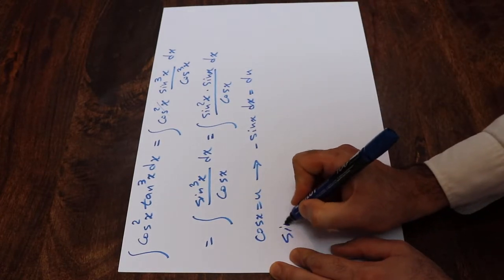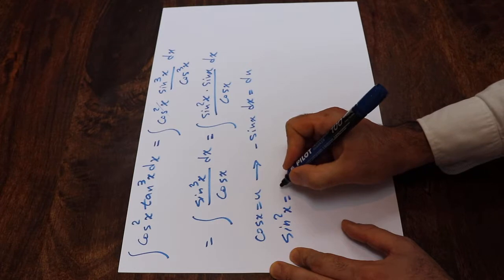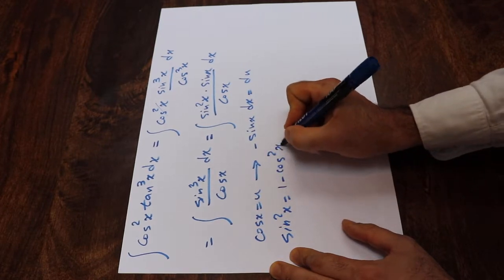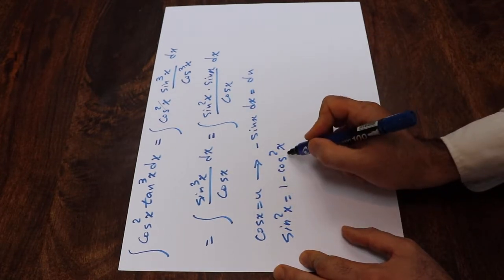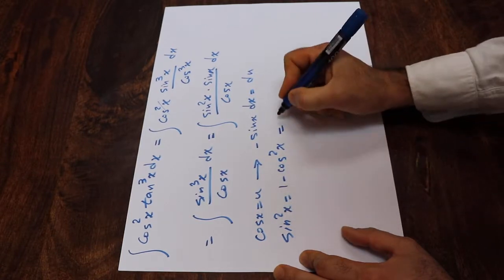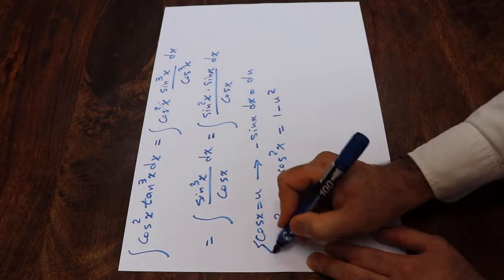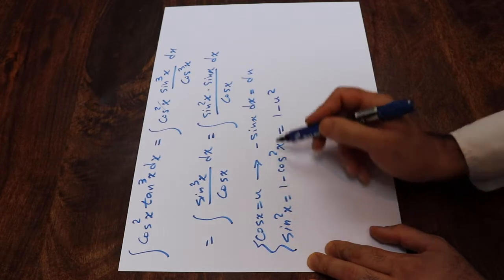So from trigonometry, we know that sine 2x is equal to 1 minus cosine 2x. And since cosine x is equal to u, therefore sine 2x will be equal to 1 minus u2.